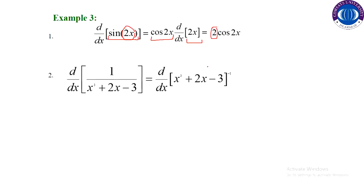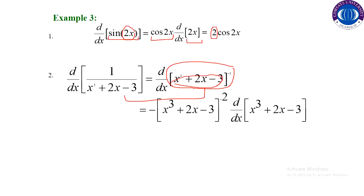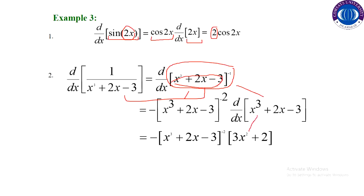In the second example we can write the function using the power rule for the outside function. Using the power rule we differentiate the outside function and multiply by the derivative of the inside function, which is 3x squared plus 2, giving us the derivative.